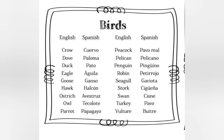Now we're going to do birds. Crow: cuervo. Dove: paloma. Duck: pato. Eagle: águila. Goose: ganso. Hawk: halcón. Ostrich: avestruz. Owl: tecolote. Parrot: papagayo. Peacock: pavo real. Pelican: pelícano. Penguin: pingüino. Robin: petirrojo. Seagull: gaviota.